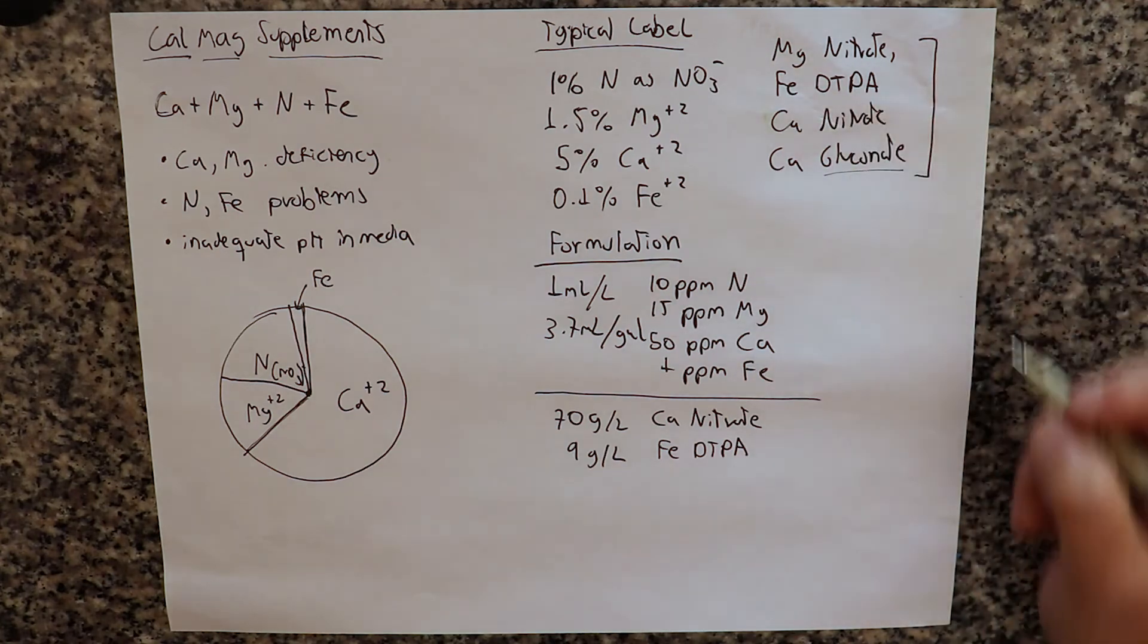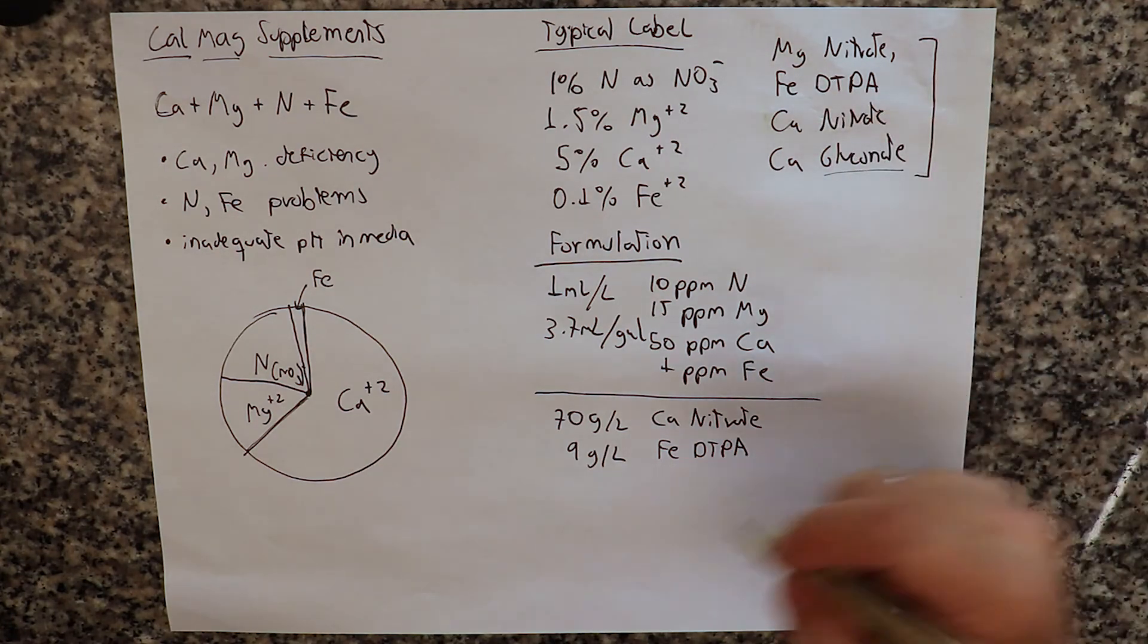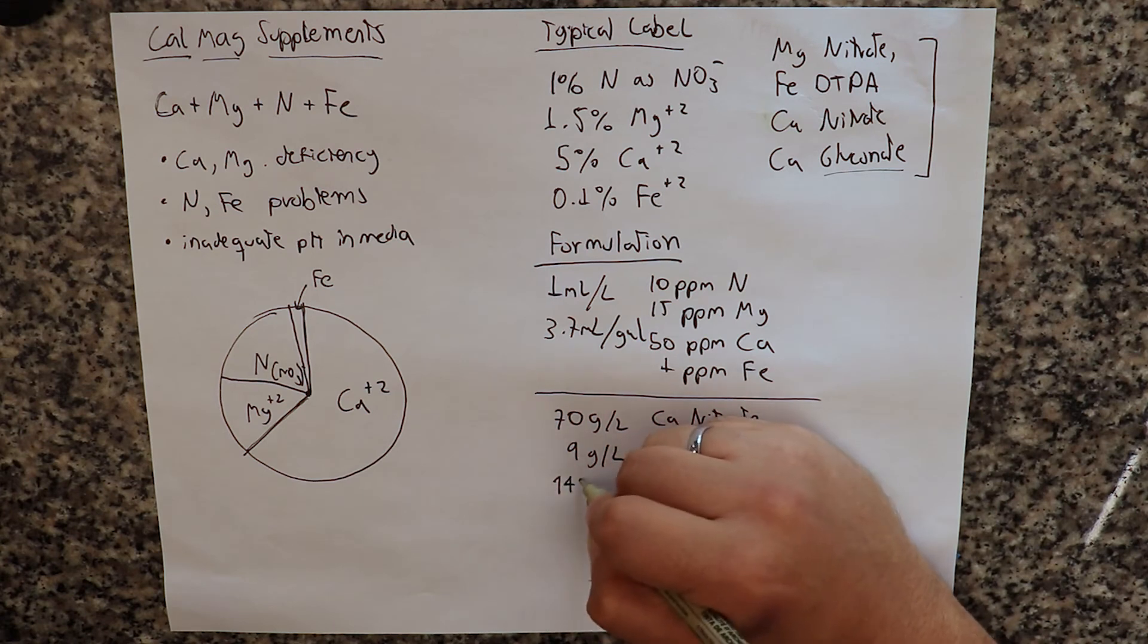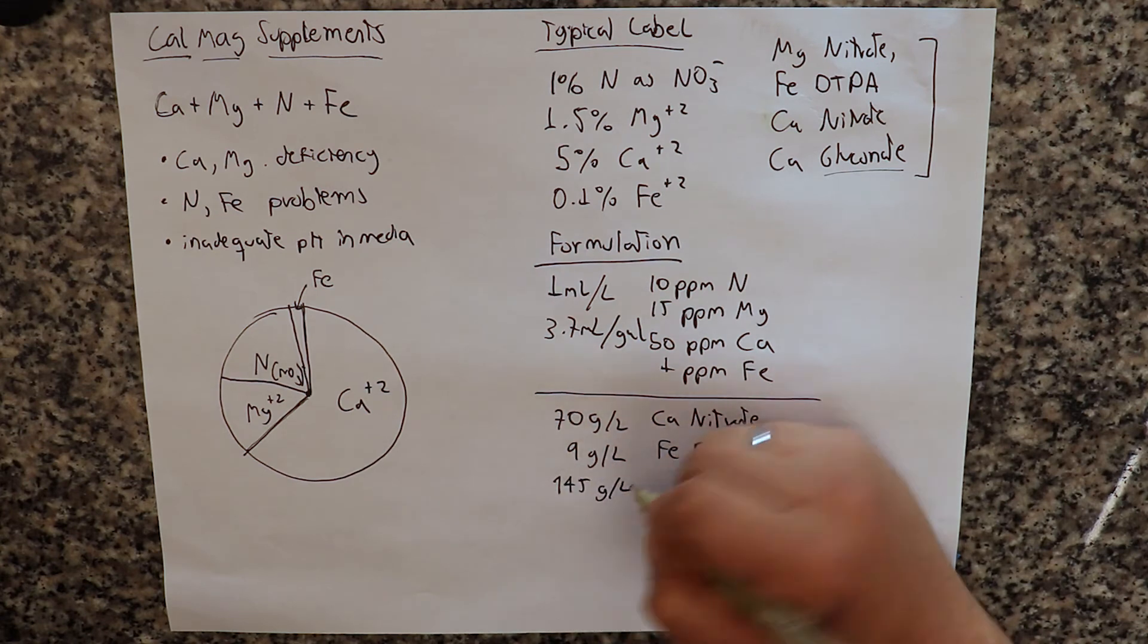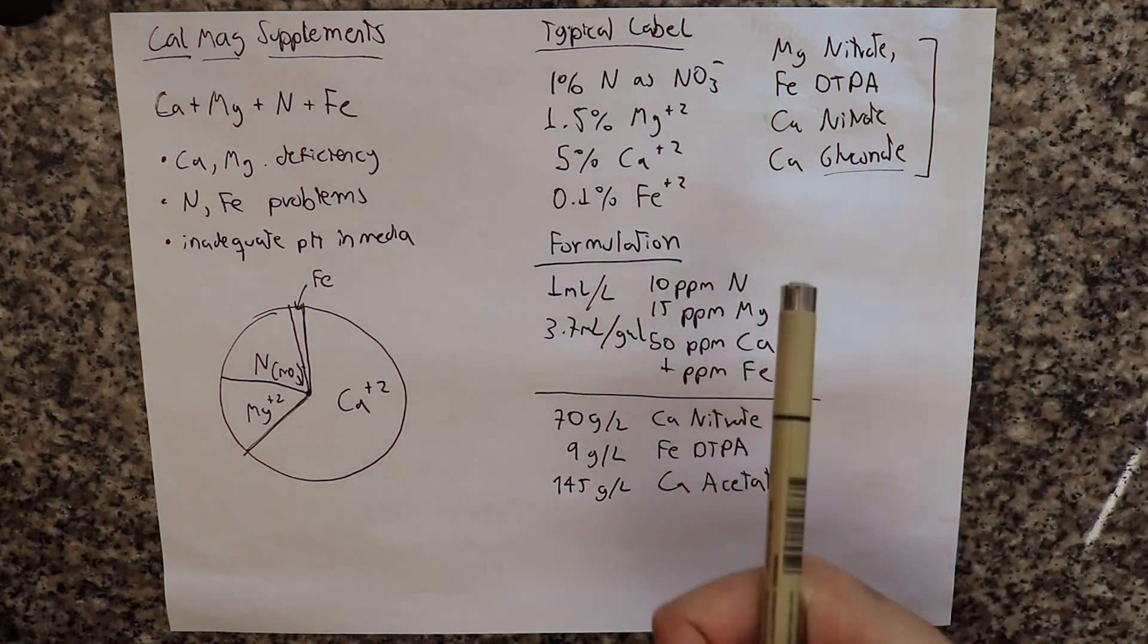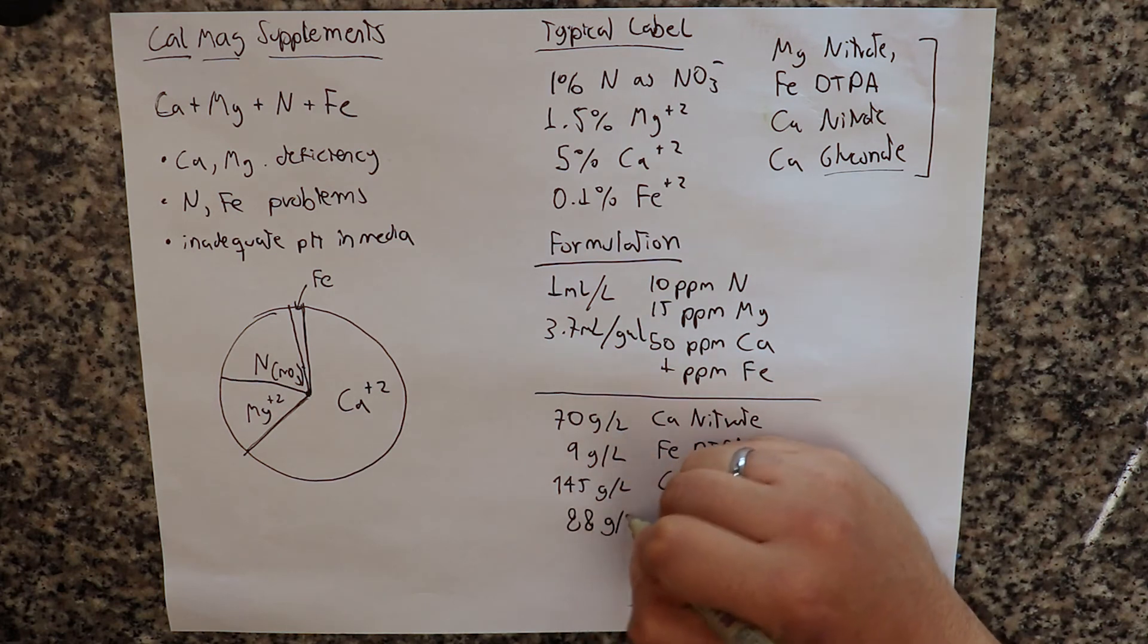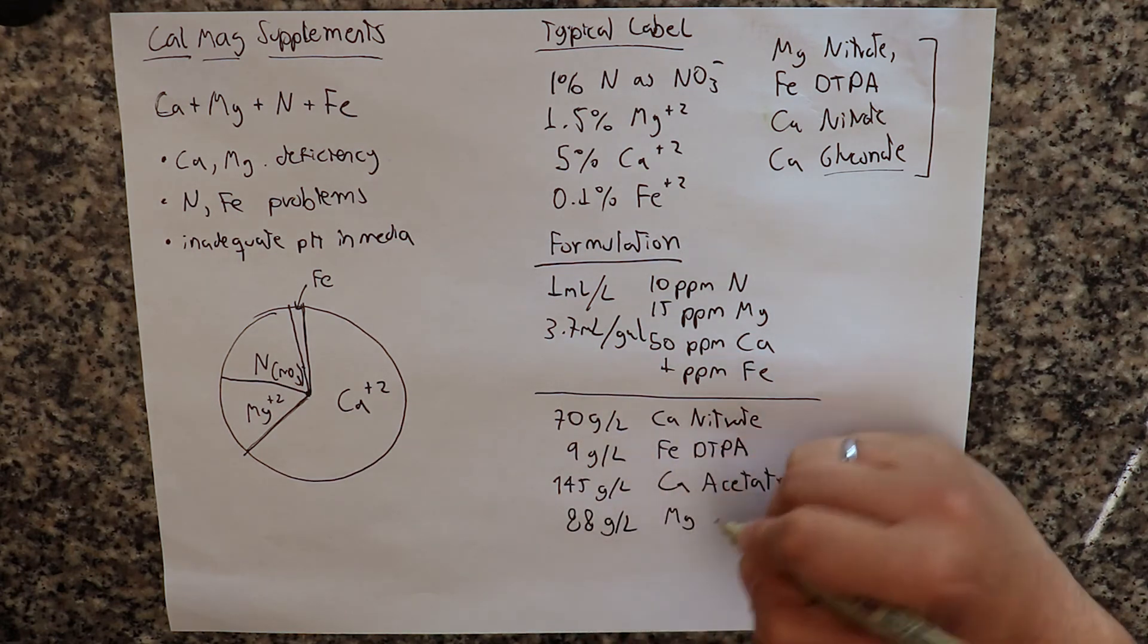And then instead of using magnesium nitrate, we are going to use some of the salts that are most typically used in these products, which would be 145 grams per liter of calcium acetate. And we would have 88 grams per liter of magnesium acetate.